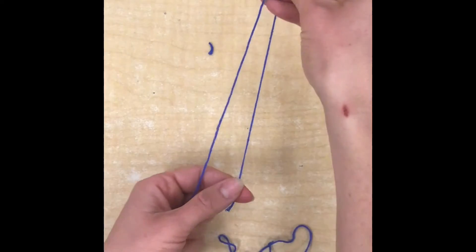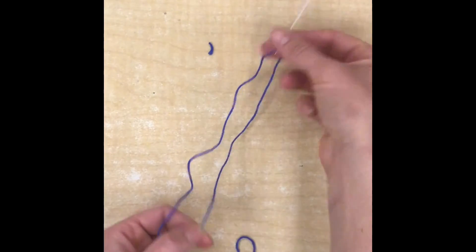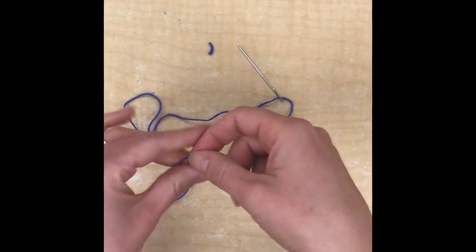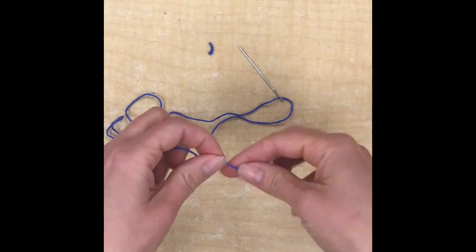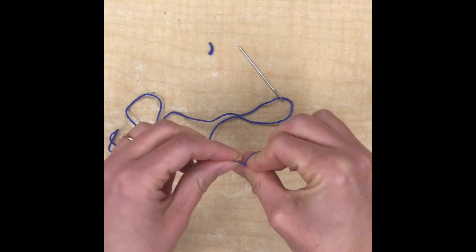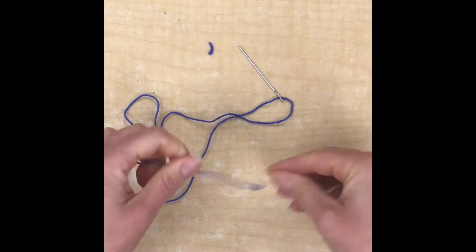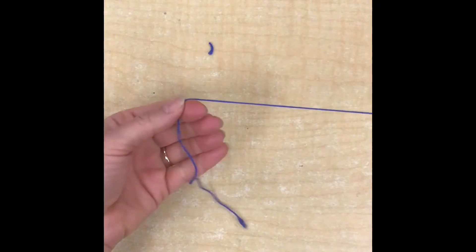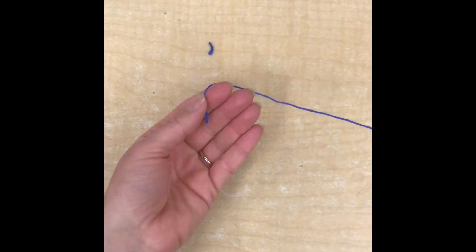I'm going to pull a little bit of the thread through so that my needle doesn't come off, and then on the end of the very long piece of thread is where I'm going to have my knot, right at the very end. So now I have my needle on and I have a nice long piece for sewing with a knot at the very end.